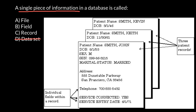A collection of records makes a file, and a collection of files makes a database. Usually when we say 'database,' we mean that collection of files have to be related. So now you know that a single piece of information is called a 'field' — that is a single entry — and a collection of fields we call a 'record.' The correct answer is answer B: a single piece of information is called a field.